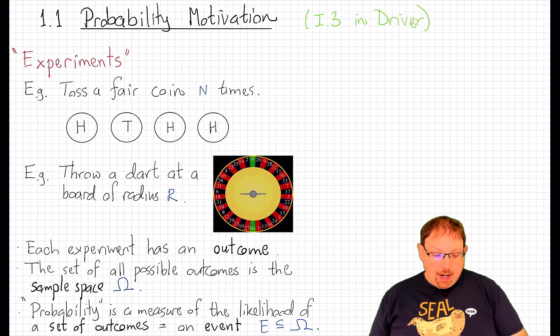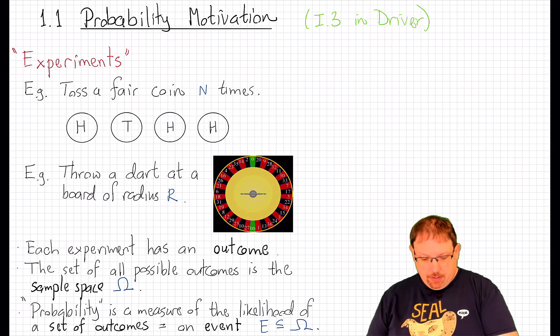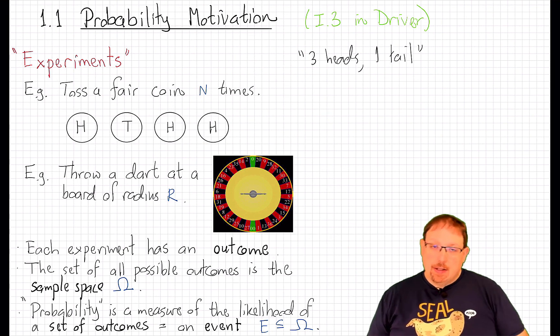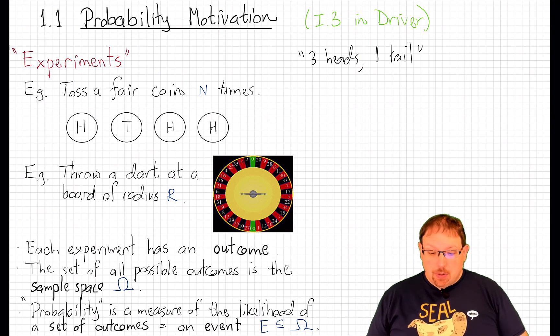For example, this is one outcome in the event that there were three heads and one tail. That is an event, which is not a single outcome in this experiment. It's actually a collection of four outcomes.